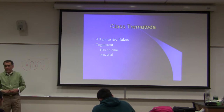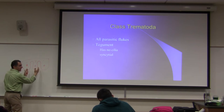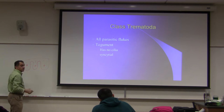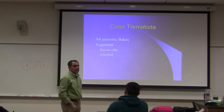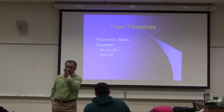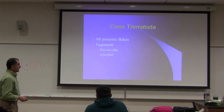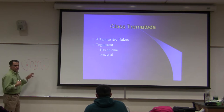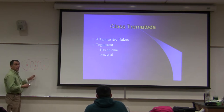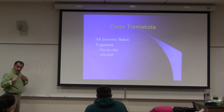In these animals, they have invaginations of the cell membrane. These are all nuclei. They have multiple nuclei in each cell, with remnants of cell membranes, but they're not completely separated from each other, unlike our cells, our epidermis. That would be a nice essay question - compare the syncytial tegument of trematodes with our epidermis.